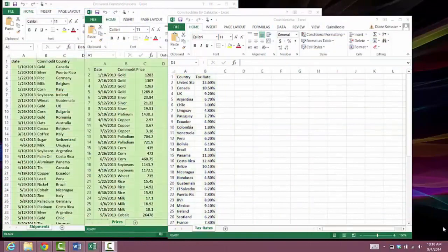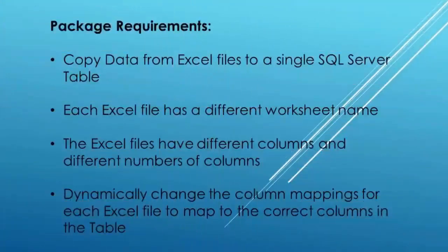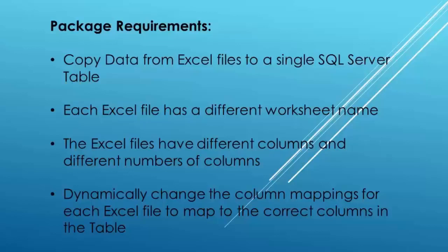The Countries Excel file has only two columns, whereas the other two Excel files have three columns. To make it more realistic, I also used a different worksheet name in each Excel file, and each Excel file has a different set of columns. Data Flow Task Plus will dynamically adapt to handle different columns and different numbers of columns in each Excel file, and it will transfer the data from all of them to a single SQL Server table. That means our SQL Server table has all the possible columns in it, and only the columns in the Excel file being processed at the time will be copied into the table.